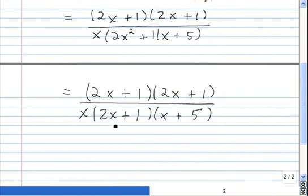If we foil this out in our head, we find we have 2x times x. That gives us our 2x squared. That gives us the 11x that we need. And finally, plus 1 times 5 gives us the plus 5 we need. So 2x plus 1 times x plus 5 is the correct factorization of 2x squared plus 11x plus 5.